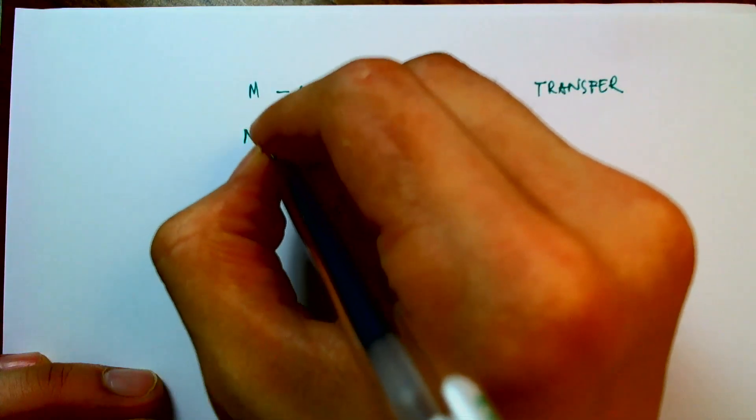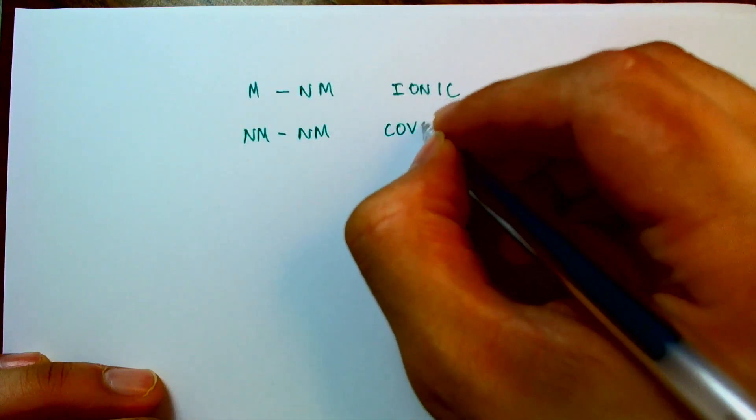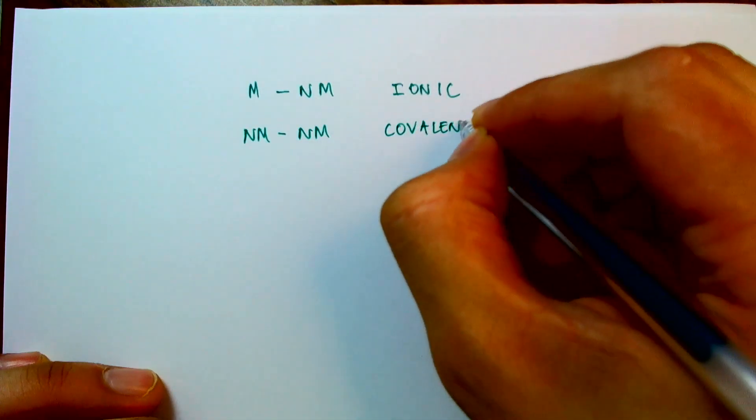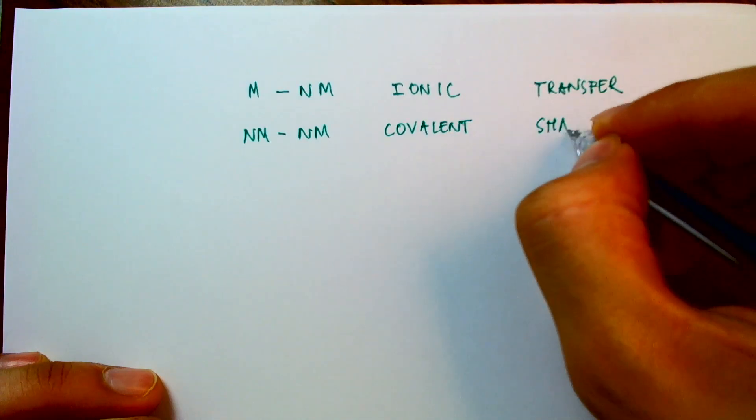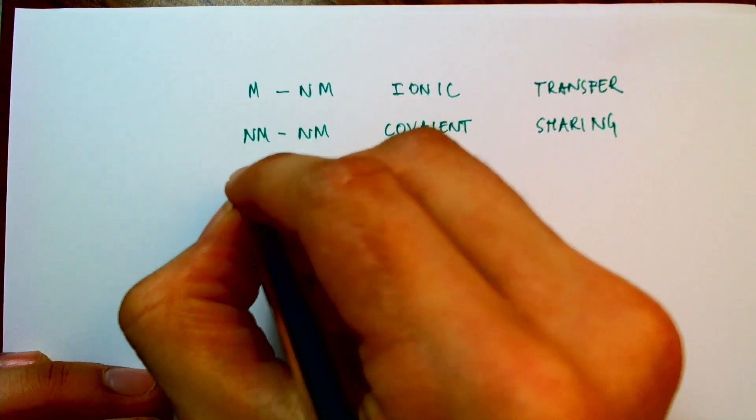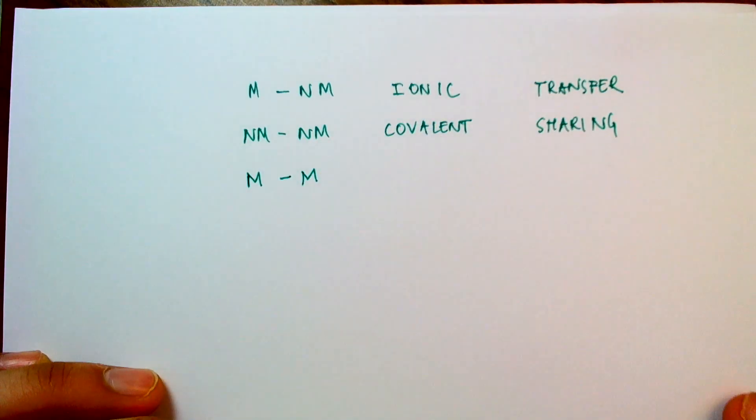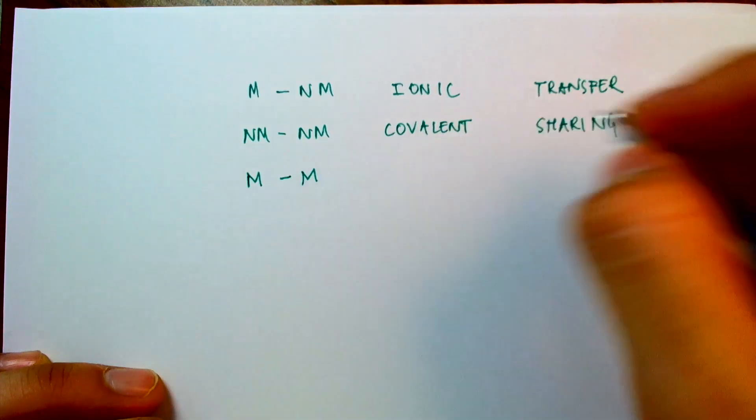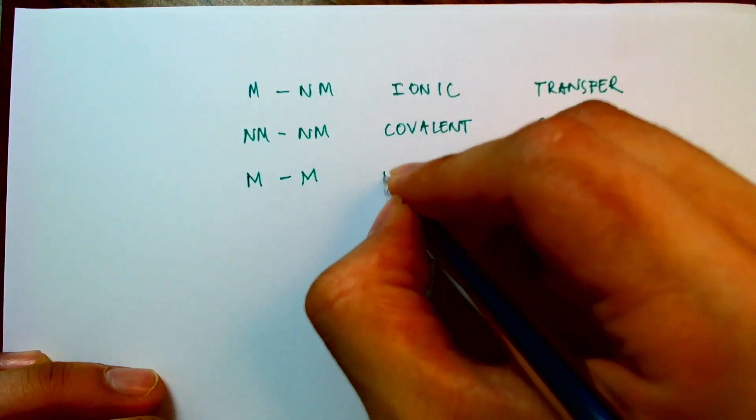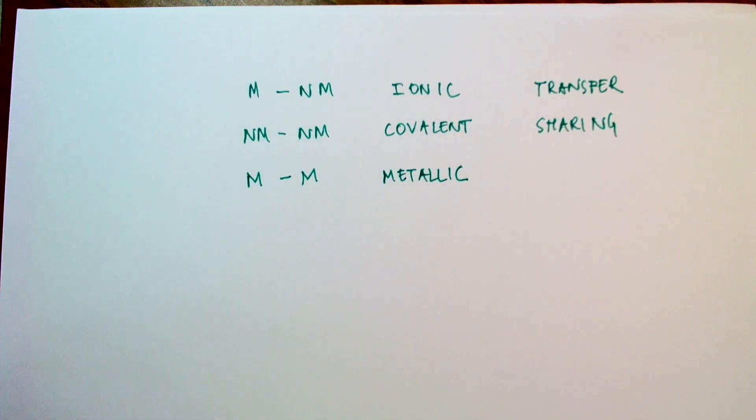And we also saw how non-metals combine with non-metals using covalent bonds, and that involved the sharing of electrons. So to complete the picture, we now need to look at how metals combine with metals, and this forms a metallic bond, and we'll see how metals do that.